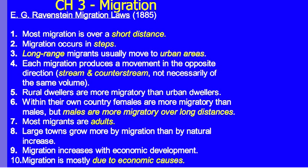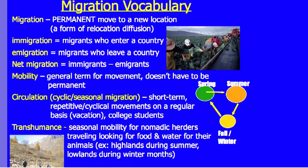Migration is a permanent movement to a new location and is a form of relocation diffusion. An immigrant with an I is a migrant who enters a country — think 'in,' coming into a country. Emigration with an E is a migrant who leaves the country — think E for exit. Net migration is immigrants minus emigrants: a positive net migration means more people are entering a country than leaving.